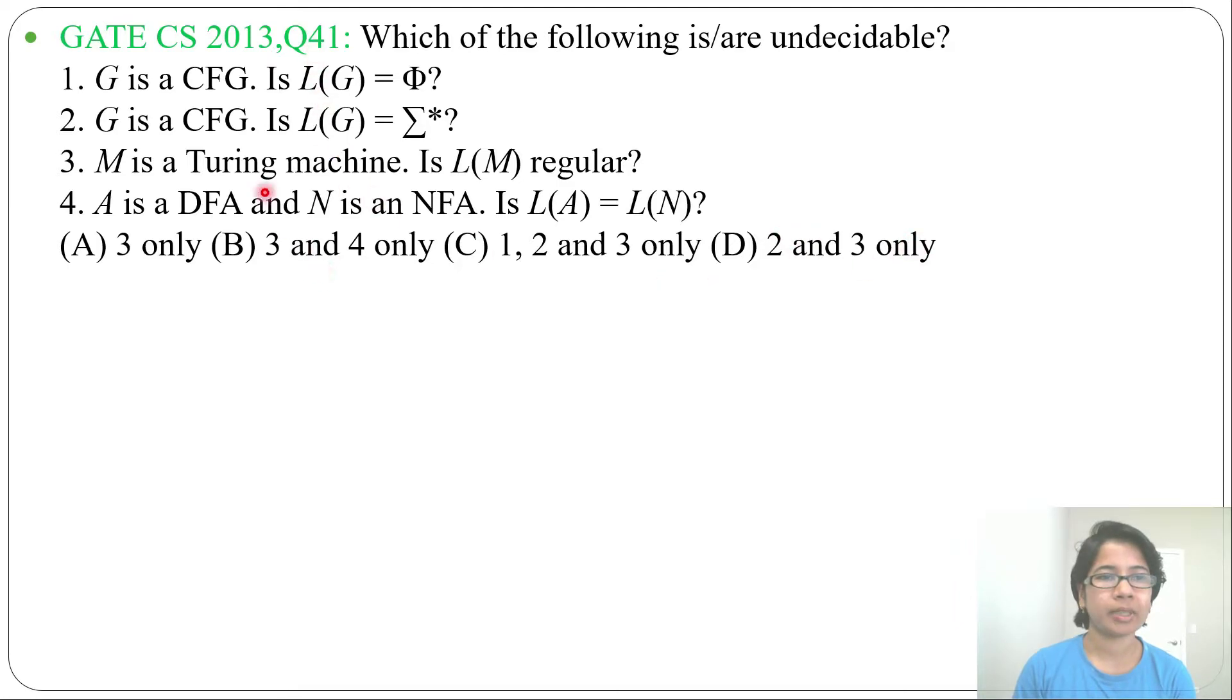Statement 1: If G is a context-free grammar, is L(G) = φ? φ means empty language. I already discussed in decision properties that emptiness for context-free grammars is decidable.